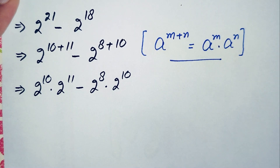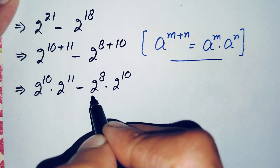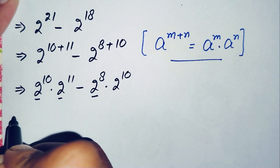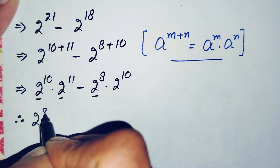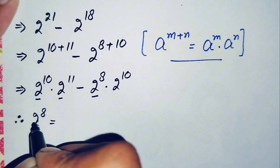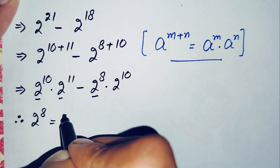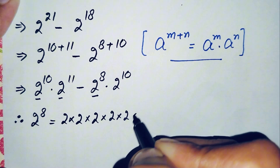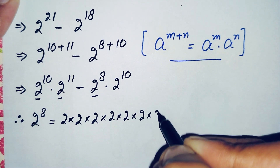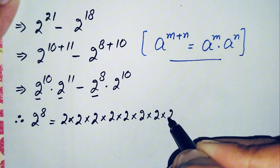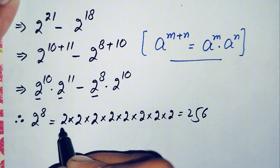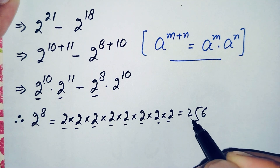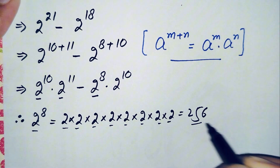Here we will find the value of each number: first 2 raised to power 8, then 2 raised to power 10, and last 2 raised to power 11. The value of 2 raised to power 8 means multiplying 2 by itself 8 times: 2×2=4, 4×2=8, 8×2=16, 16×2=32, 32×2=64, 64×2=128, 128×2=256. So multiplying 2 eight times gives 256. The value of 2 raised to power 8 is 256.